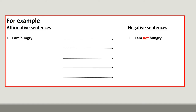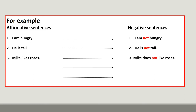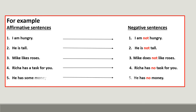For example: 'I am hungry.' becomes 'I am not hungry.' 'He is tall.' becomes 'He is not tall.' 'Mike likes roses.' becomes 'Mike does not like roses.' 'Richa has a task for you.' becomes 'Richa has no task for you.' 'He has some money.' becomes 'He has no money.' So children, we can see how by just adding 'no' or 'not', we can make an affirmative sentence into a negative sentence, where it opposes an idea.